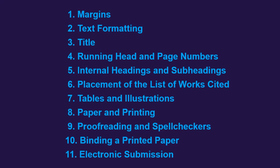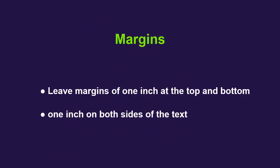Under these guidelines we have to concentrate on 11 matters: margins, text formatting, title, running head and page numbers, internal headings and subheadings, placement of the list of works cited, tables and illustrations, paper and printing, proofreading and spell checkers, binding a printed paper, and electronic submission.